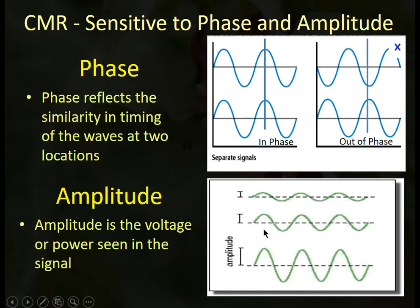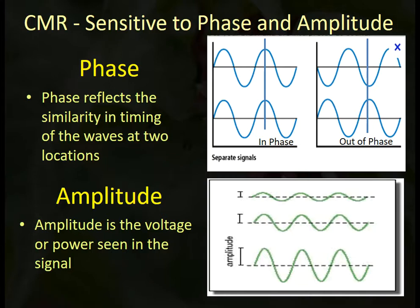The amplitude issue is important because if you have a source of 60 hertz artifact closer to one sensor than another, the amplitude might look different even though it's the same 60 hertz artifact. If the amplitude is significantly different, those two signals will be retained and you'll see higher levels of 60 hertz artifact. Sometimes just rotating the client slightly in their chair in relation to the electromagnetic field will improve common mode rejection.